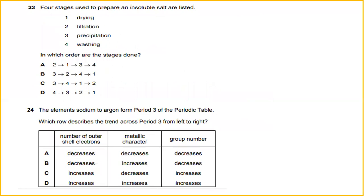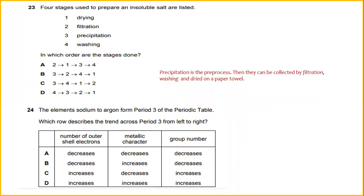Four stages used to prepare an insoluble salt are listed. First we have precipitation as the pre-process. Then the salt can be collected by filtration, followed by washing and drying on paper. So the answer would be B.